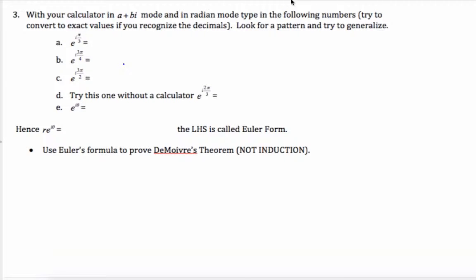Okay, so this video, I'm going to ask you to do a little bit of computations without my help. In your calculator in a+bi mode and in radian mode, I want you to type these in exactly as you see them. We're going to look for a pattern. This is kind of messy, it's e^i to the π by 3.